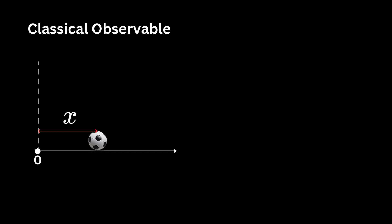For instance, we can measure the distance of an object like a ball from a reference point such as a wall. We can also measure its velocity which is a real number. So in classical mechanics, an observable is essentially just a real number.